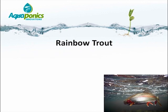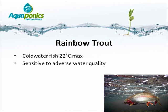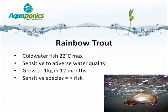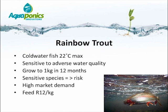Rainbow trout is a cold water species. The maximum temperature they can survive is about 22 degrees Celsius. They are sensitive to adverse water quality conditions and rough handling. However, they grow to a kilo in about 12 months. The species is fairly sensitive, which translates to increased risk — if pumps stop due to a power failure, a backup generator is absolutely necessary. The joy of trout is that market demand is high in South Africa. Feed price is currently around 12 rand per kilogram, and the market price is about 65 rand per kilo, offering a good potential profit margin.